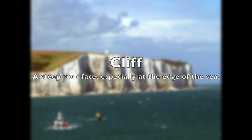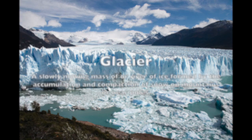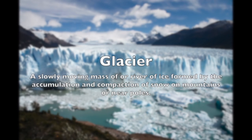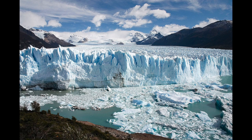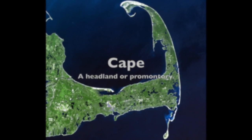Cliff: a steep rock face, especially at the edge of the sea or ocean. Glacier: a slow-moving mass or river of ice formed by the accumulation and compaction of snow on mountains or near the poles. Cape: a headland or promontory.